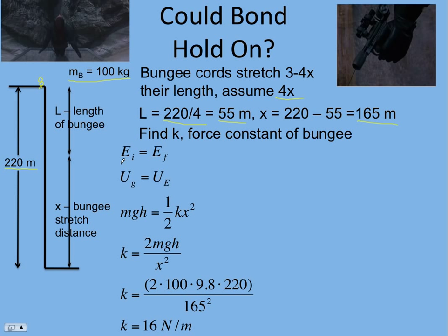Conservation of energy says initial energy equals final energy — we're neglecting air resistance. Setting height zero at the lowest point of the jump, the initial energy is all gravitational potential energy and the final is all elastic potential energy. So MGH equals one-half kx squared. Solving for k, using 100 kilograms, 9.8 newtons per kilogram, 220 meters for H, and 165 meters for x, we get k equals 16 newtons per meter.